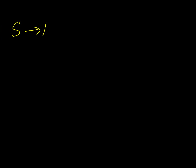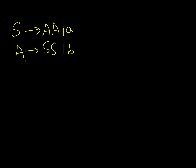Now we shall take an actual example to convert CFG into GNF. Let's say we have: S produces AA as well as terminal a, and A produces SS as well as terminal b. This grammar is already in simplified form — it does not contain null productions, unit productions, or useless symbols.